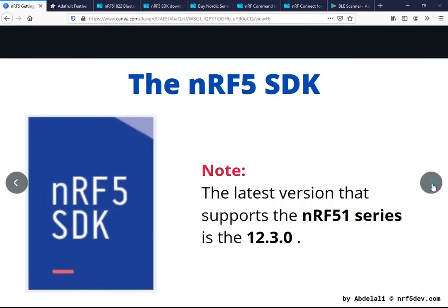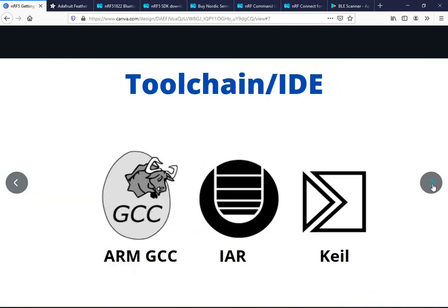Now let's move on to selecting a toolchain and IDE. For the NRF51 series we only have three toolchains supported: GCC, IAR, and Keil — Keil version 4 and version 5 with no packs. You need to choose between the three.